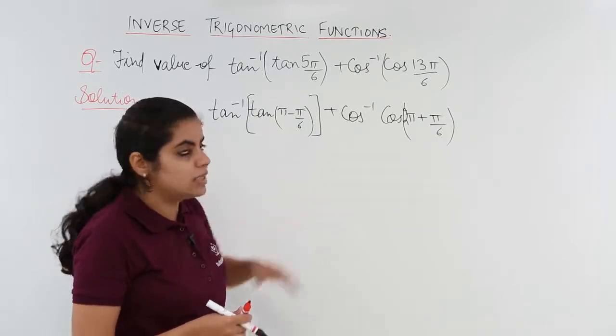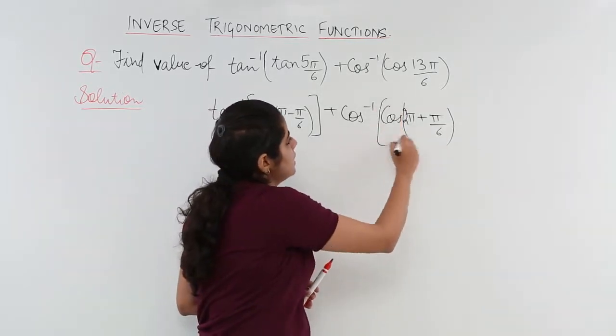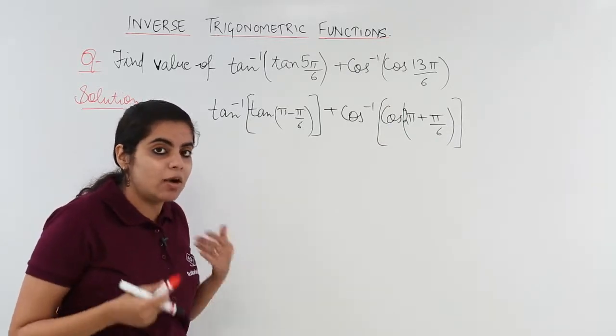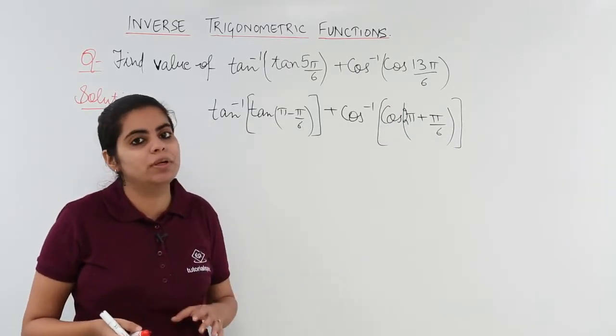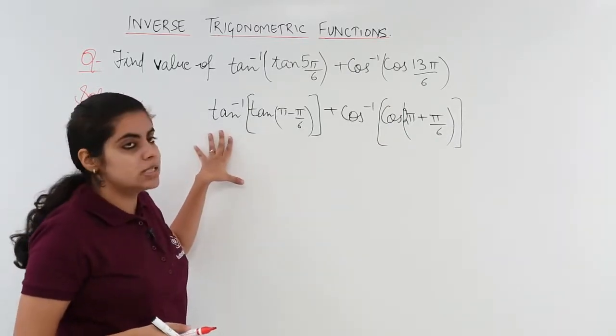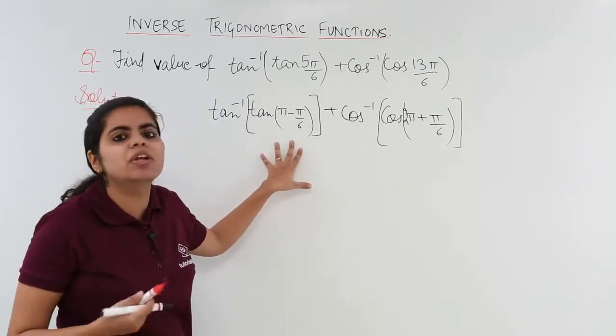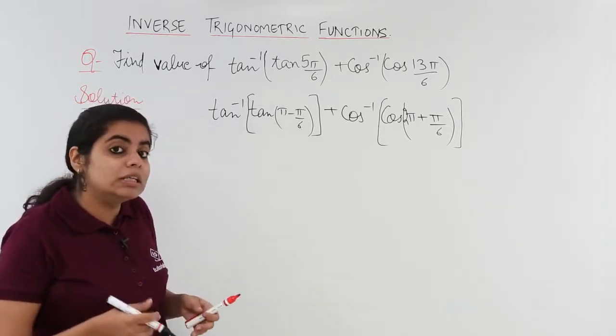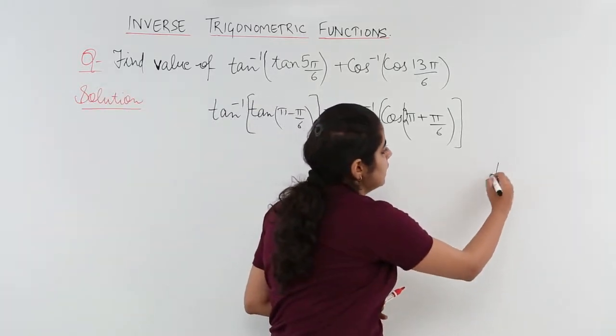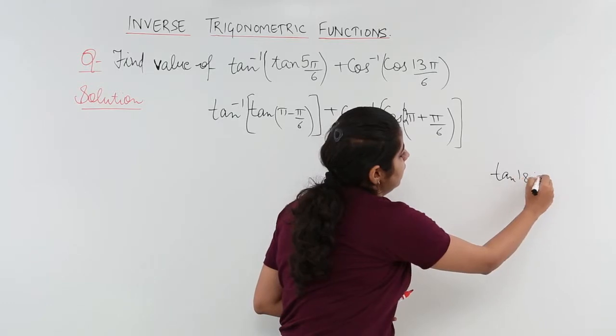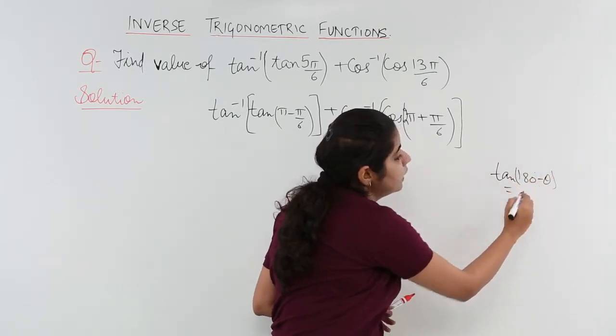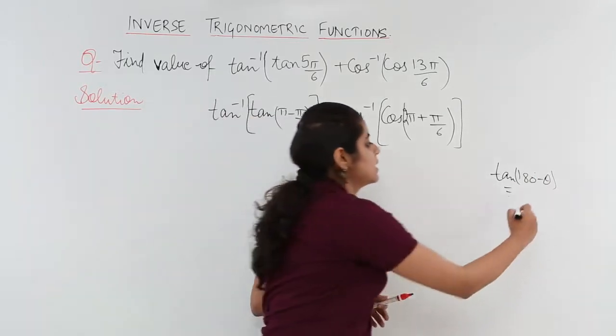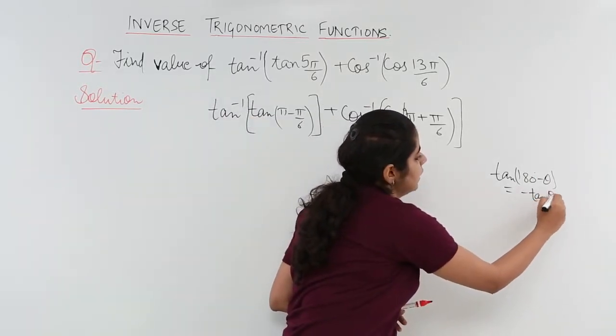Now you have both these things. What else is now required? We have to understand and apply the concept of trigonometry now because inverse is outside but inside it's just a trigonometric function. Tan 180 minus theta is what you have learnt in your previous classes. Tan 180 minus theta means which quadrant?